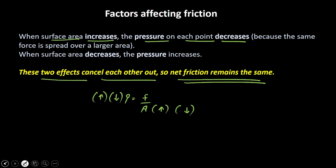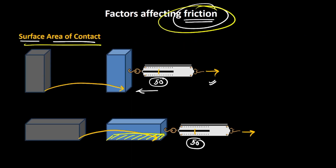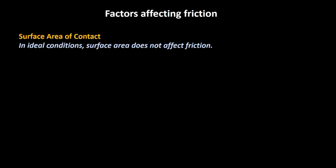So even if the surface area was more, the pressure was less, and that is why friction did not increase. Similarly, when surface area was less, the pressure was more. Both effects counteract each other so that friction does not change with surface area of contact. We can conclude that under ideal conditions, surface area does not affect friction.